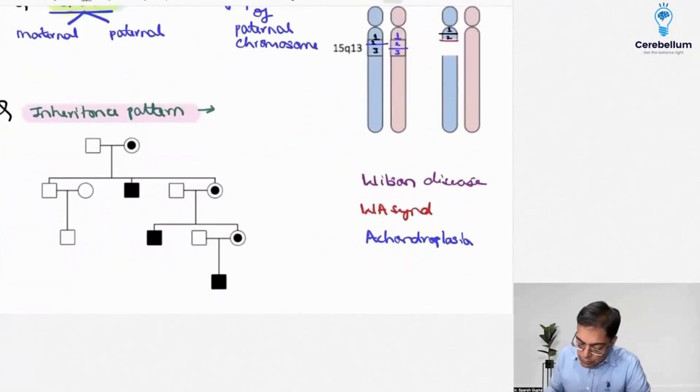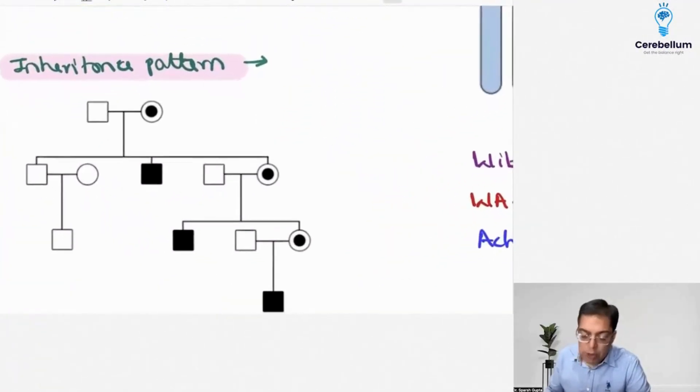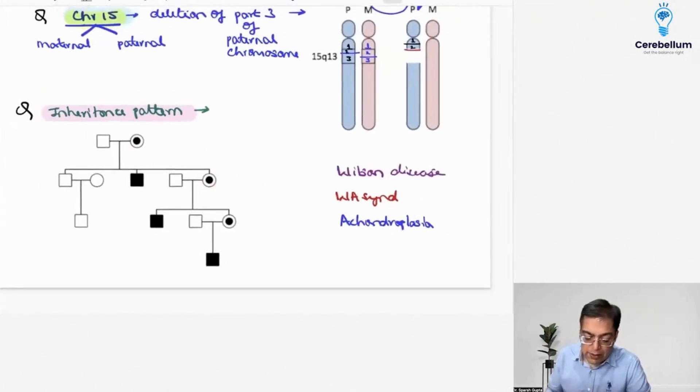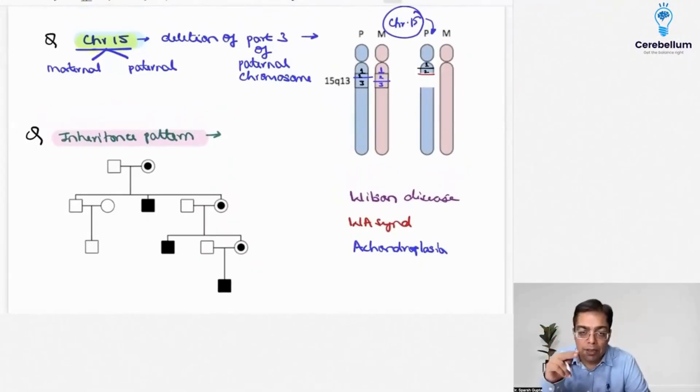Second was an example of an inheritance pattern-based question which was talking about a patient who was having a disease, and this particular disease is being transmitted. The lady is going to be having a disease and the disease is being transmitted to the male. Therefore, this is going to be a situation where it is likely to be X-linked, and particularly X-linked recessive.